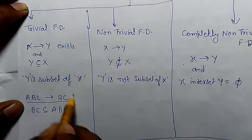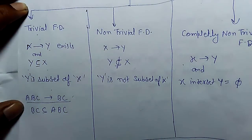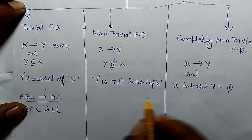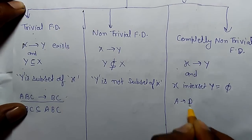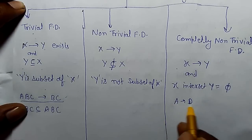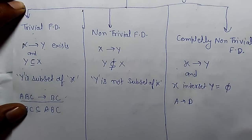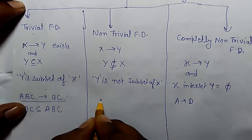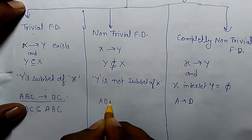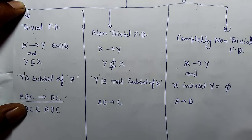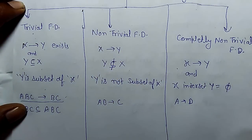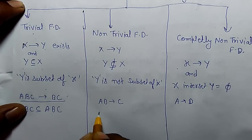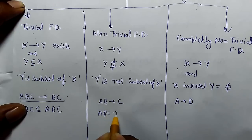So this type of functional dependency is known as trivial functional dependency. For completely non-trivial functional dependency, if A determines D, then A and D intersection is phi, which is why it is completely non-trivial. For non-trivial functional dependency, in case ABC determines C — that is also non-trivial. In case ABC determines BD, that can also be non-trivial functional dependency.